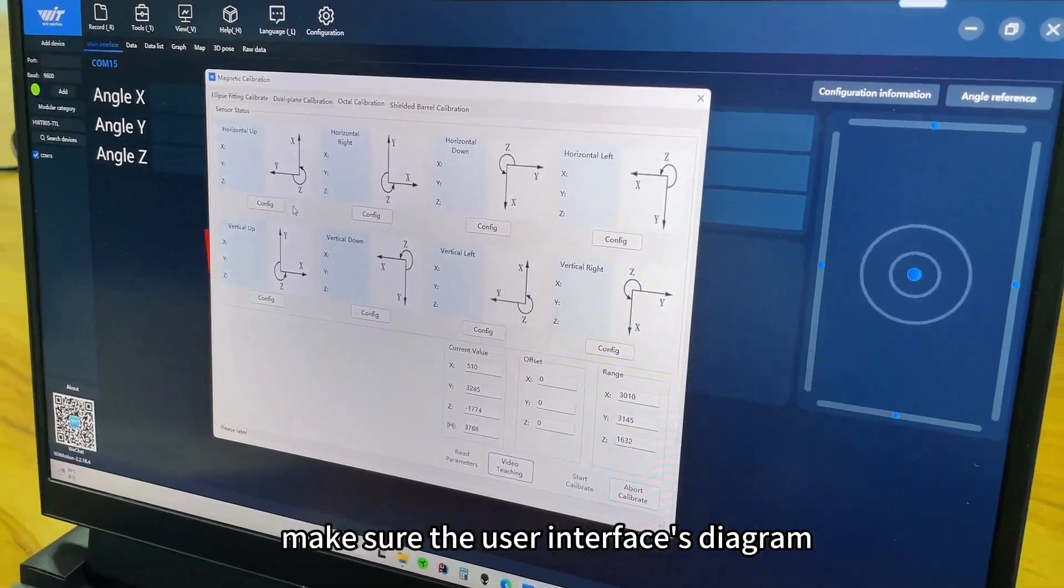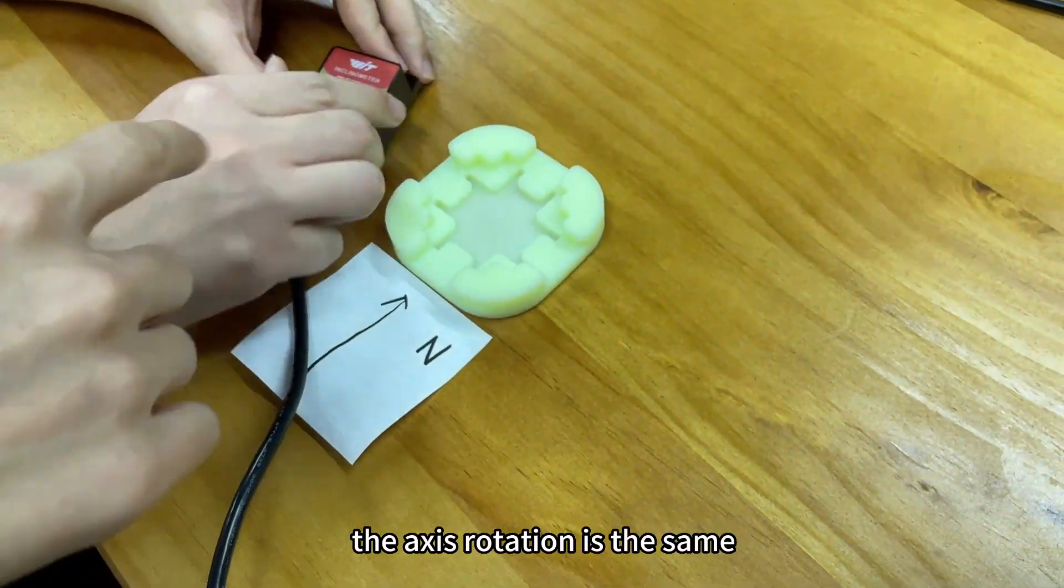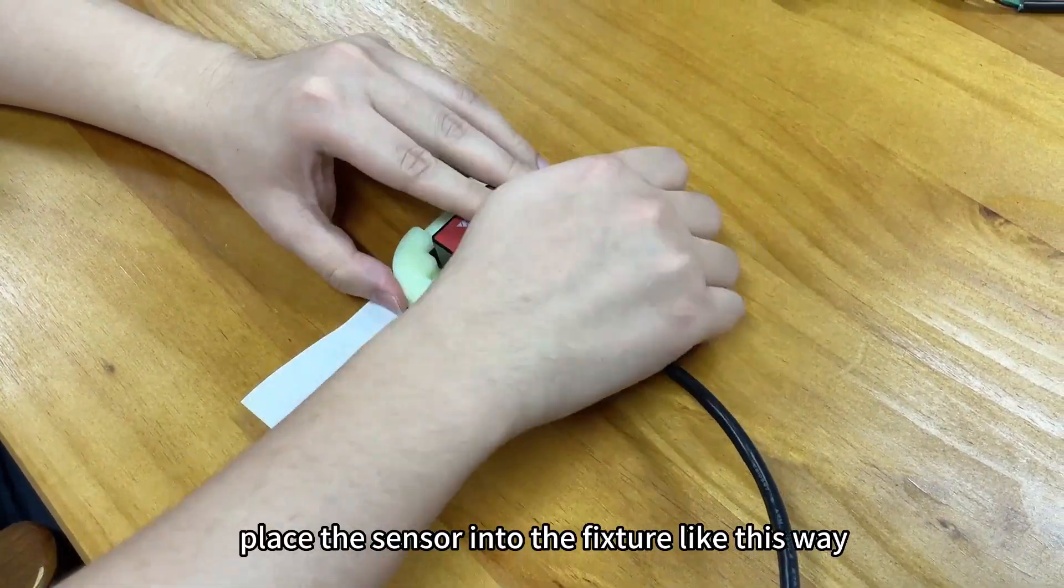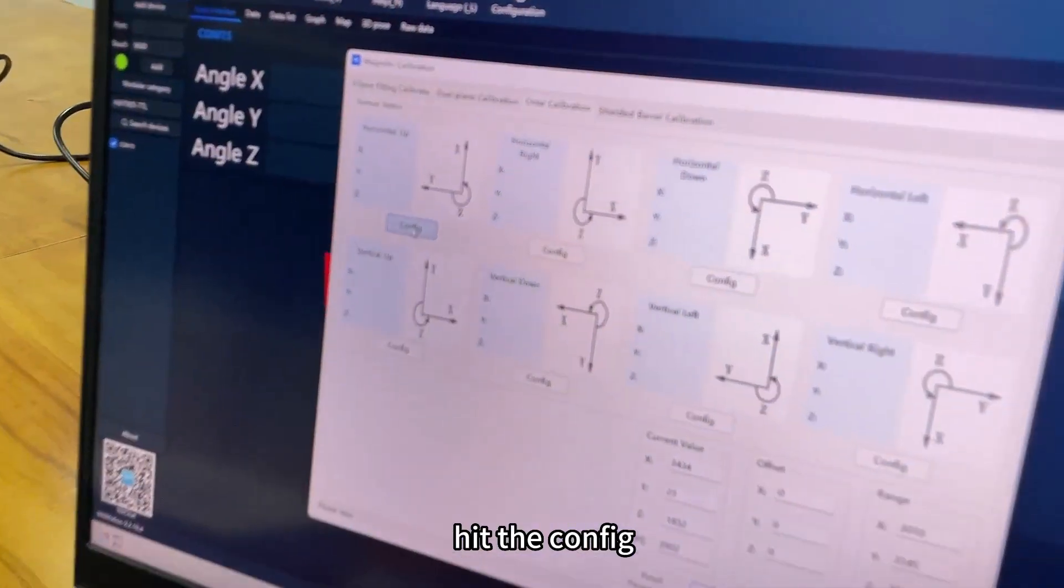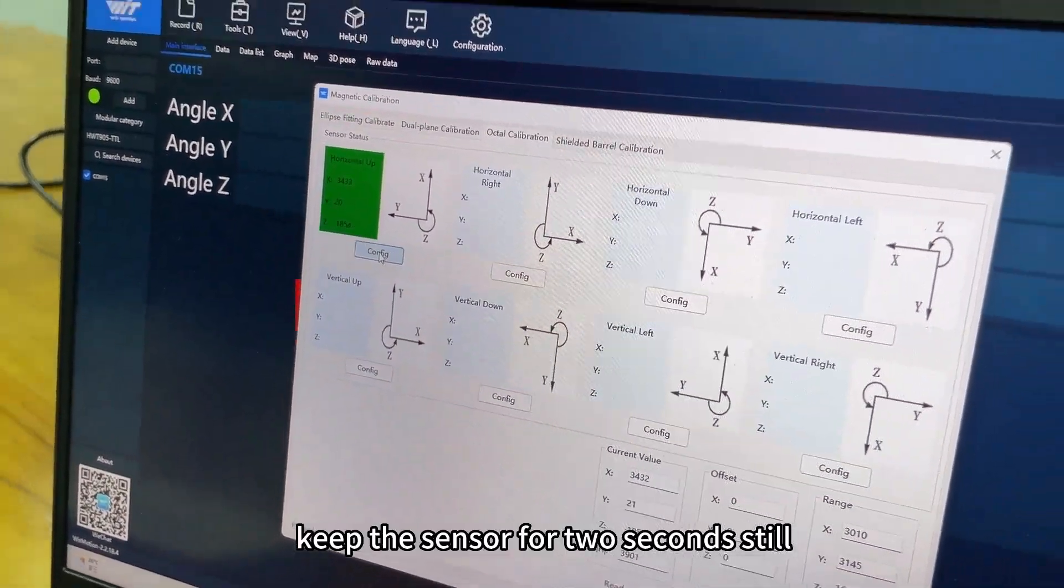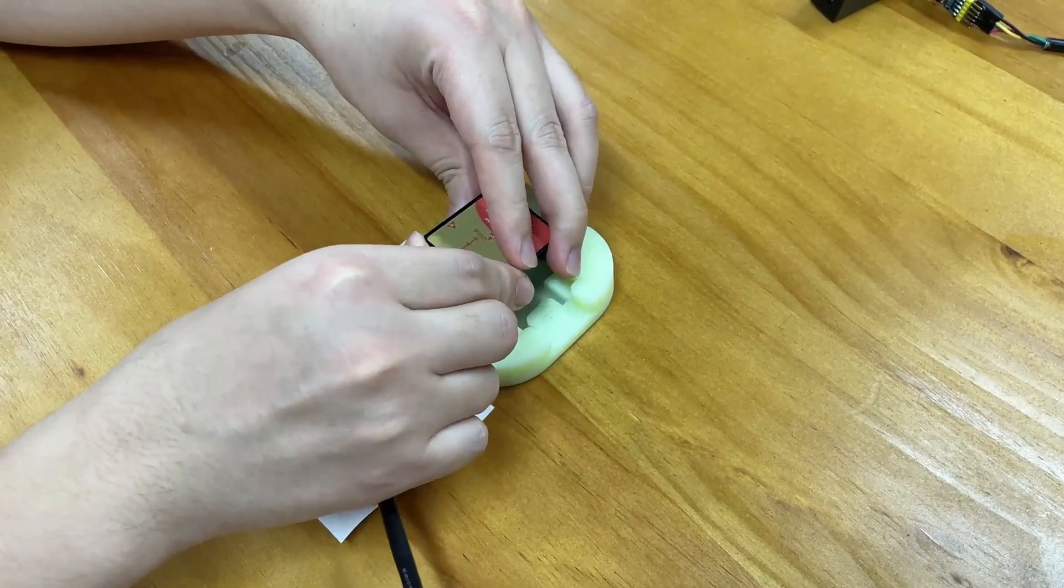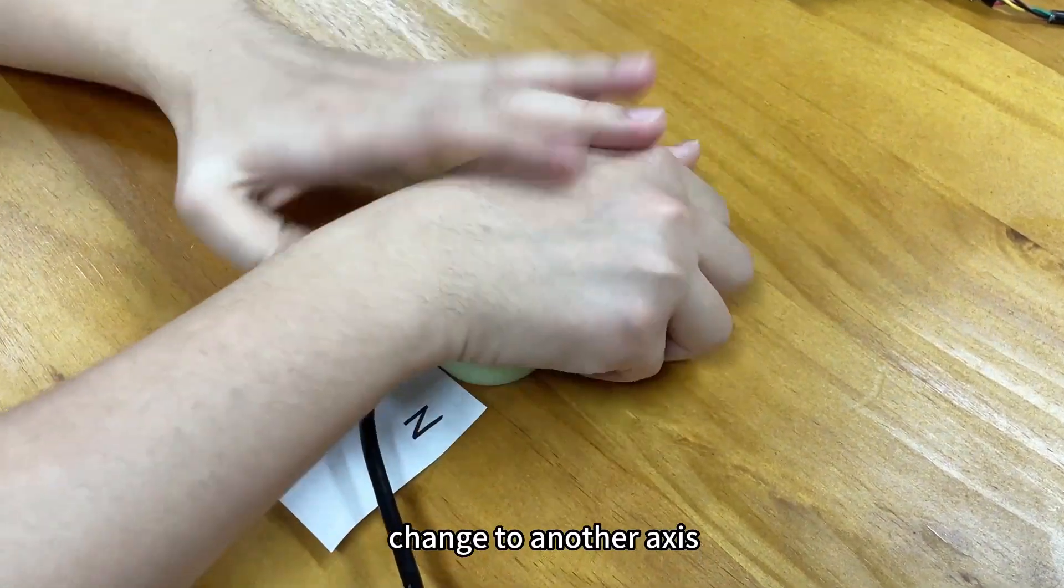You need to check the user interface for the axis rotation and fix the sensor into the fixture like this. Hit the config button and keep the sensor still for two seconds, then change to another axis.